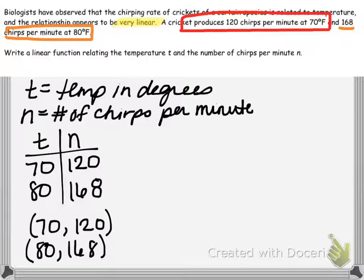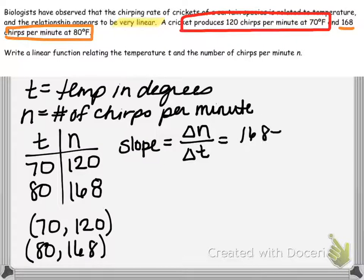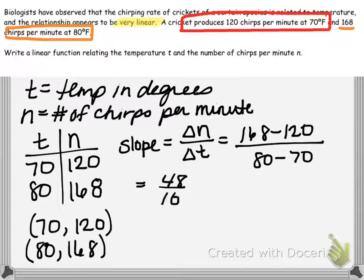Since we're trying to write the equation for a line, we need to find the slope to begin. The slope is the change in y over the change in x. I'm going to write that as the change in N, since N is our dependent variable, divided by the change in T. We subtract our y values: 168 minus 120 divided by the difference in our x values, 80 minus 70. This simplifies to 48 divided by 10, which gives us a slope of 4.8.